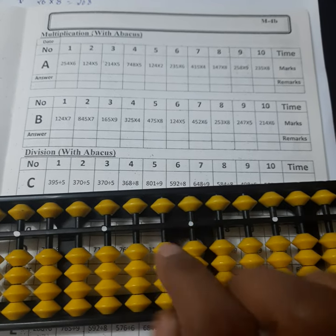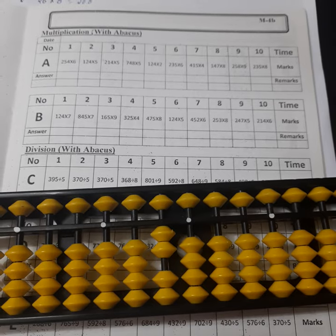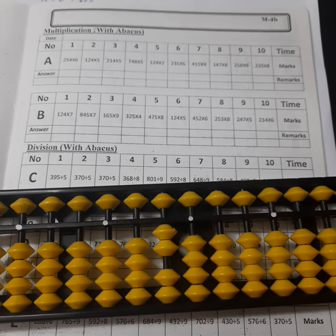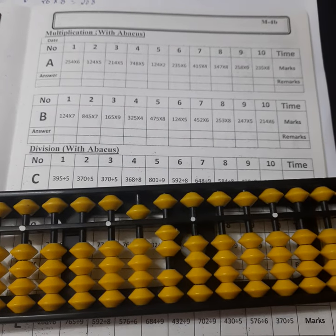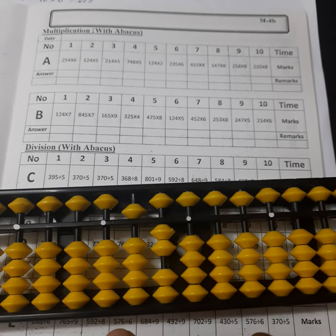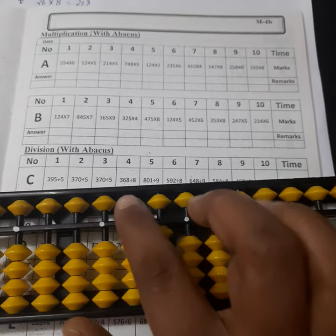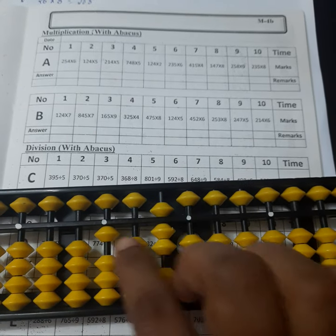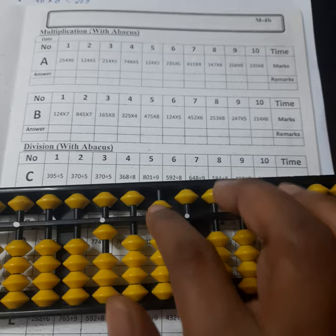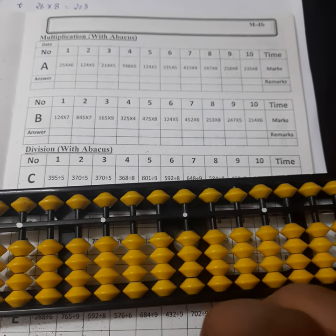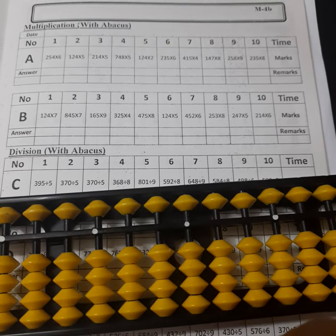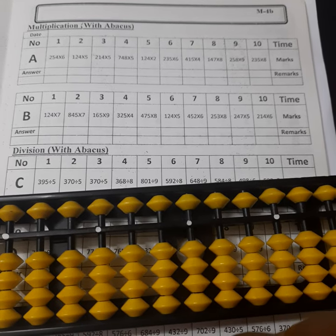Next question. 5 times 4 is 20. 5 times 1 is 5. 5 times 2 is 10. The answer is 1070.